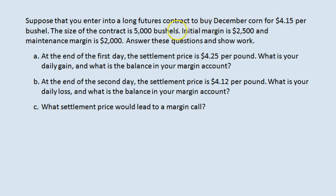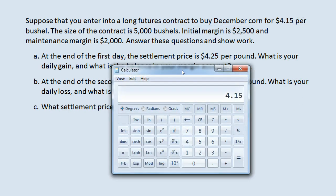When you purchase this contract, the fact that the initial margin is $2,500 means you put up $2,500 to enter this contract. It's only $2,500 even though you've obligated yourself to buy 5,000 bushels of corn at $4.15 per bushel, which is much more than $2,500 — it is $20,750. You only need to put up the $2,500.